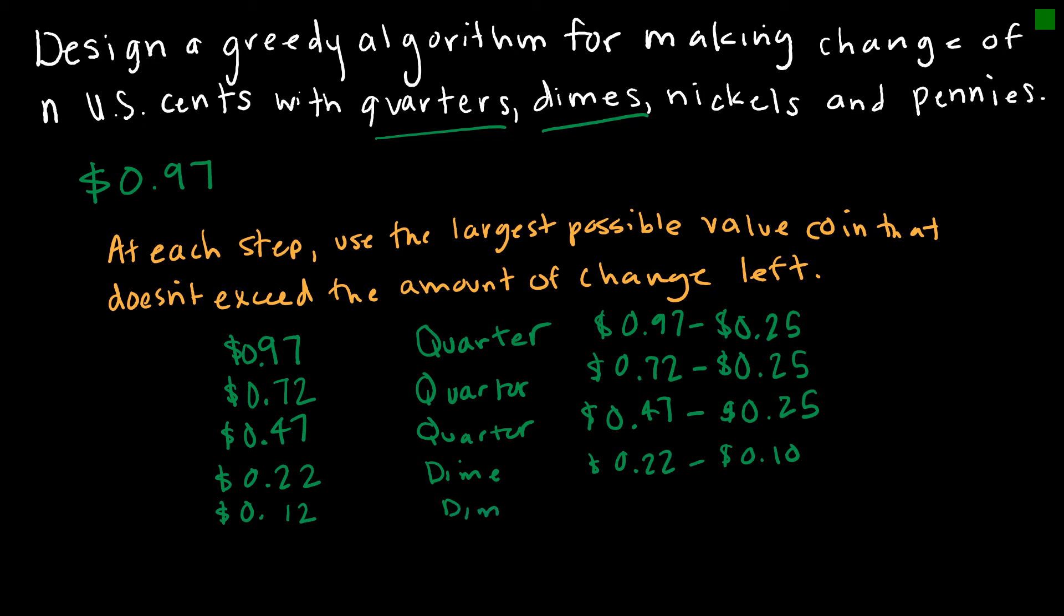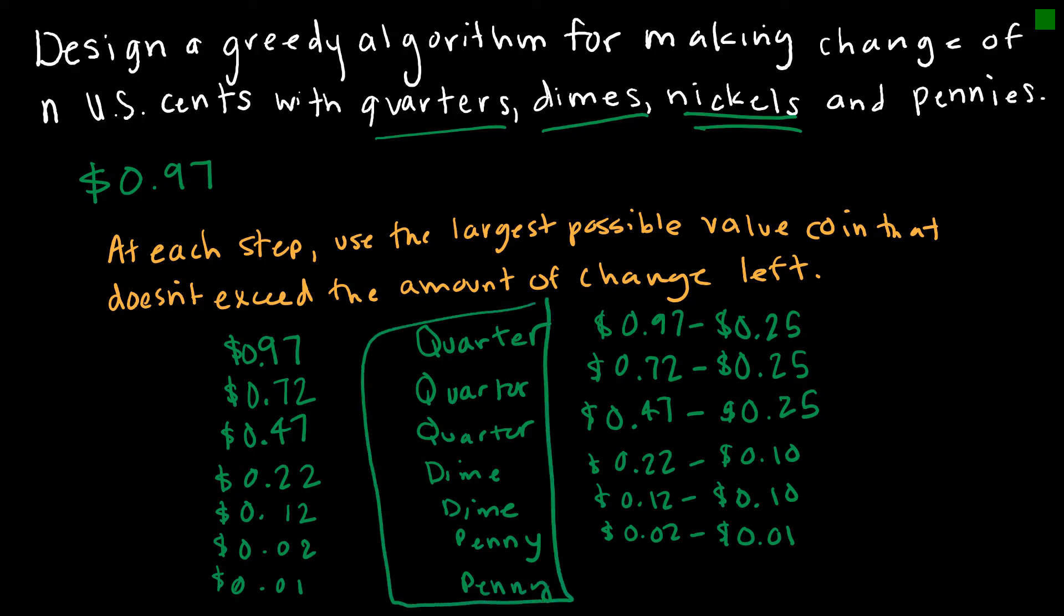I can give you another dime, which means 12 cents minus 10 cents, which means now I owe you 2 cents. So notice I had to skip right over nickel because I couldn't give you 5 cents back. So now I'm going to give you a penny, which is 2 cents minus 1 cent, and then I'm going to give you another penny because you only have 1 cent left. And so this would be the change that I would give you back.